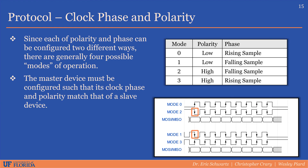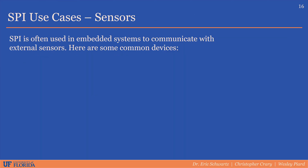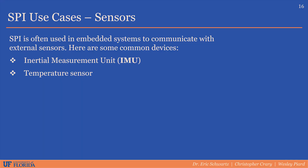Since SPI is commonly used for interfacing with external sensors, let's show some possibilities. The first is an inertial measurement unit, or IMU, used to determine the position, orientation, or movement of a system — usually containing an accelerometer and/or gyroscope, and often a magnetometer as well. More examples include a temperature sensor, a barometer which measures atmospheric pressure, and an analog-to-digital converter (ADC), which measures an analog voltage and converts it to a digital value for use within a digital system.